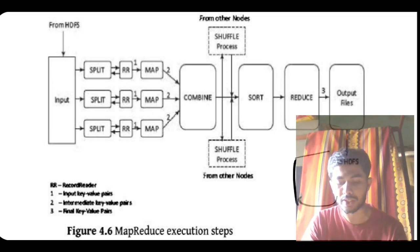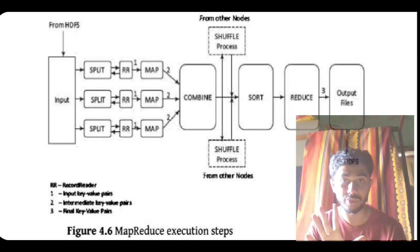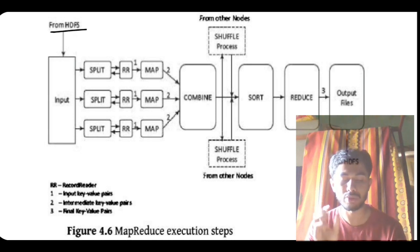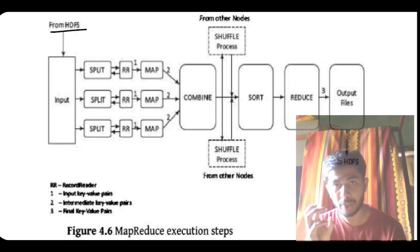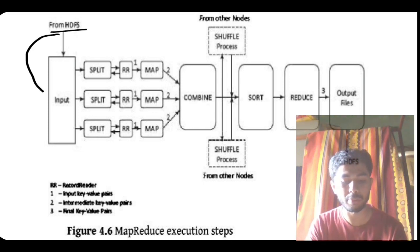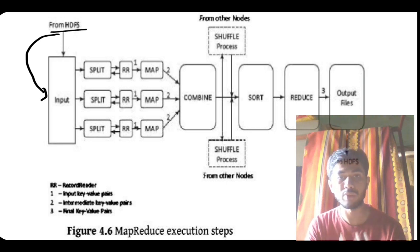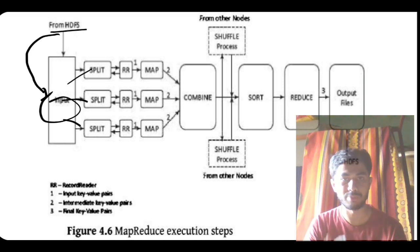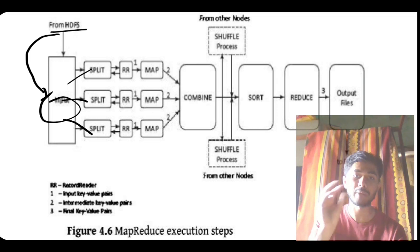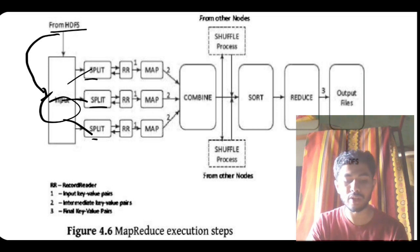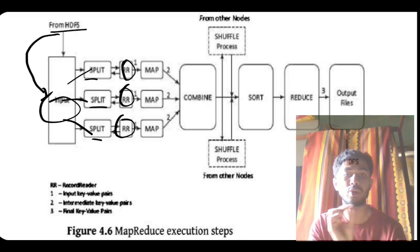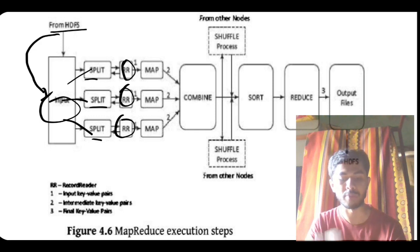First, you will have some storage — HDFS Hadoop Distributed File System — containing very big data that you want to get into a mapped and reduced format. The first step is passing it to the input, where you have all the data to be mapped and reduced. That data gets split into different sections, because all the data cannot be processed at the same time — it has to be split and processed in parallel. After splitting, the next step is to read the record: keep the relevant thing, discard the irrelevant.